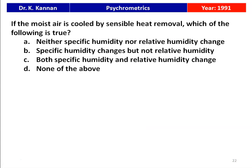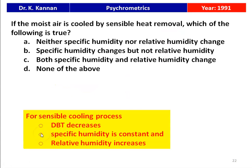The next question is from the 1991 question paper. If moist air is cooled by sensible heat removal, which is true: neither specific humidity nor relative humidity changes; specific humidity changes but not relative humidity; both specific humidity and relative humidity change; or none of the above? For a sensible cooling process, dry bulb temperature decreases, specific humidity remains constant, and relative humidity increases. Since none of the given options correctly describe this, the answer is none of the above.